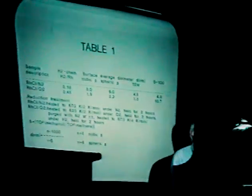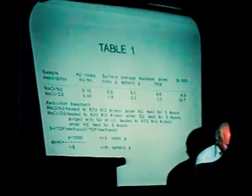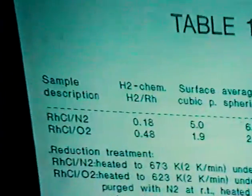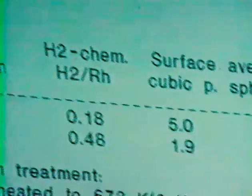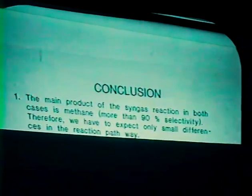Our interest now is: what may be the reason for this different behavior, and what can we do to explain these different results? At this time we can draw the first conclusion from the catalytic results. Methane is the main product of the syngas reaction in both cases. More than 90% selectivity for methane was obtained, and therefore we have to expect only small differences in the reaction pathway.